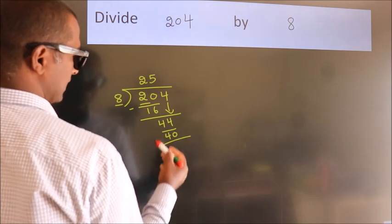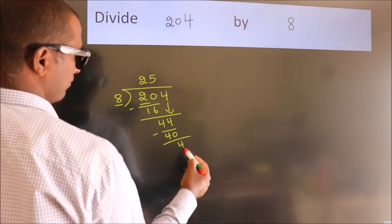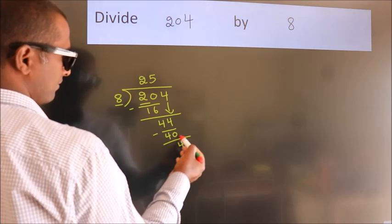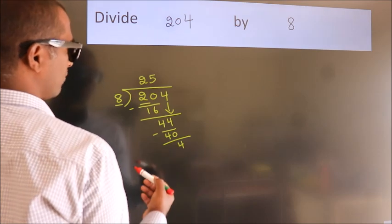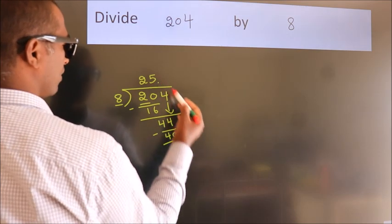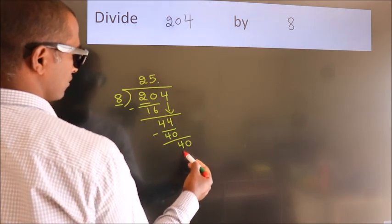Now we subtract. We get 4. After this, no more numbers to bring down. So what we do is put a dot and take 0. So 40.